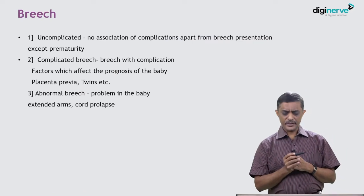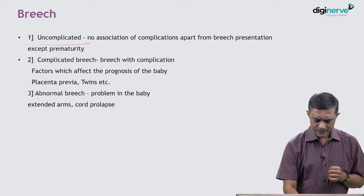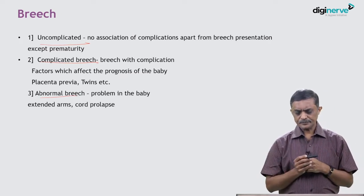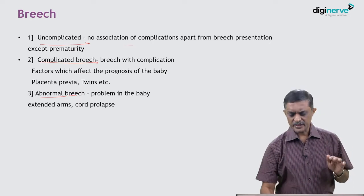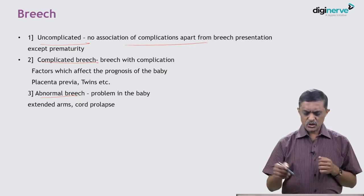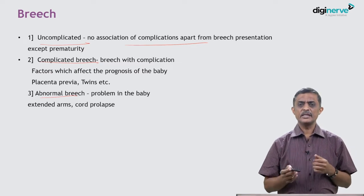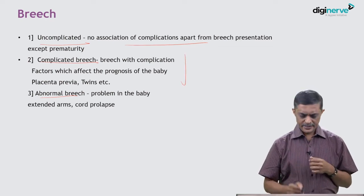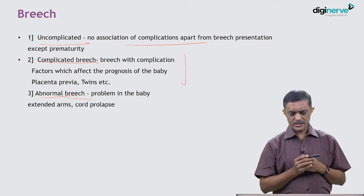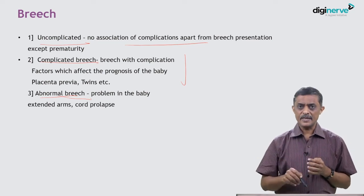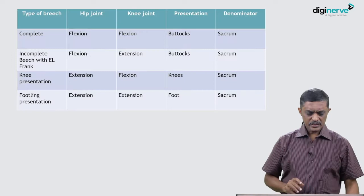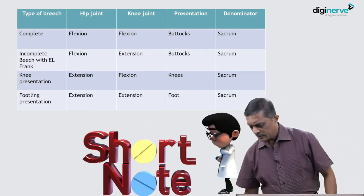Another classification: uncomplicated breech — just breech presentation with no other complication; complicated breech — breech associated with twins, placenta previa, previous cesarean section, etc.; and abnormal breech — when there is a problem with the baby itself, such as extended arms or cord prolapse.